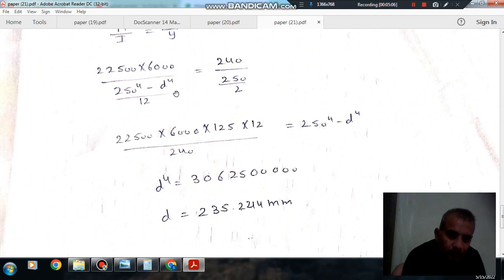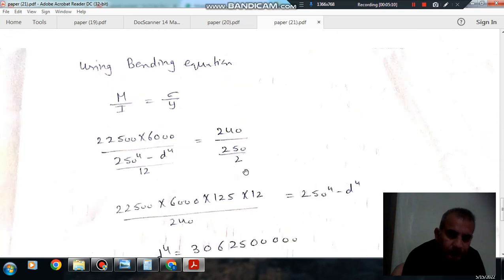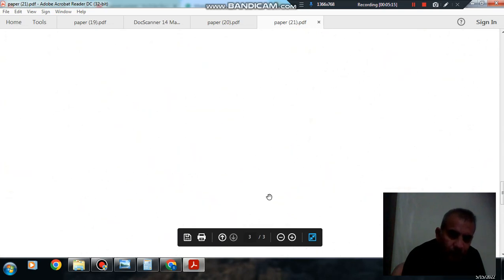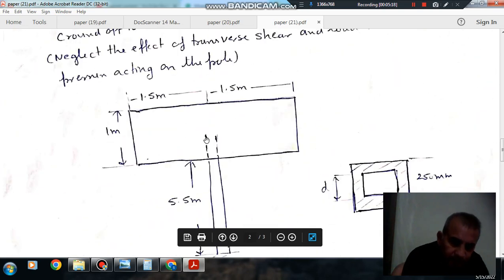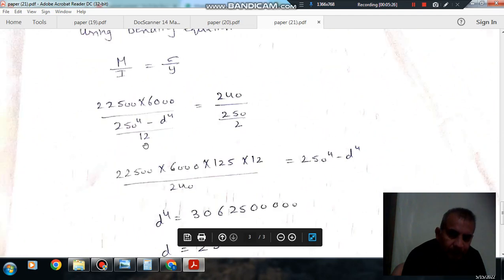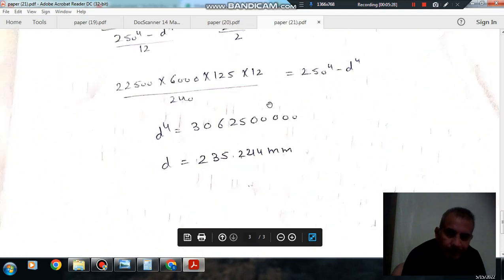So now we have only missing thing is D. So we can, we have just, D is 235.244 mm. So as force is acting like this, so bending moment will be force into this distance. And with the M by I, sigma by Y, we can find out D.